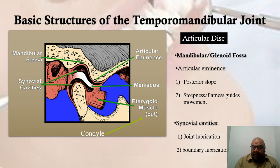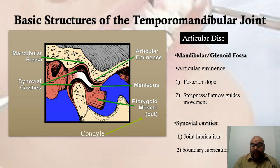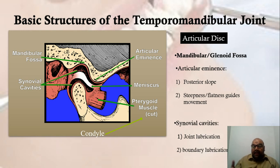Between the glenoid fossa and the condyle is a soft tissue known as the articular disc, also called the temporomandibular disc. This disc is purely fibrous in origin — there is no cartilage in it. The articular disc divides the glenoid fossa into two cavities: an upper joint cavity and a lower joint cavity. The lower joint cavity is involved in opening and closing movements, corresponding to hinge-type movements.